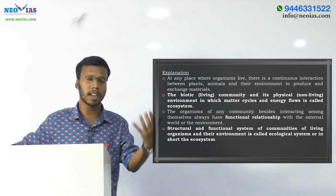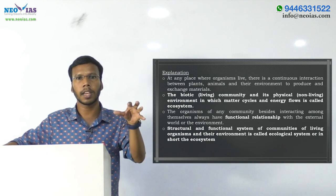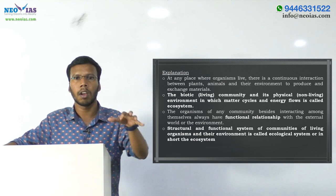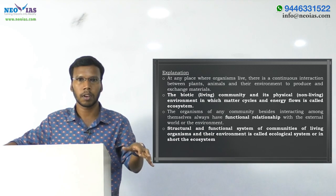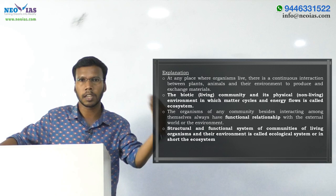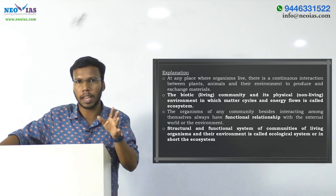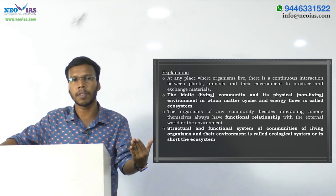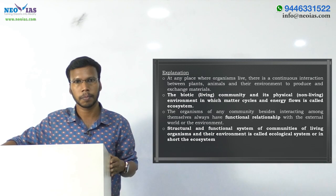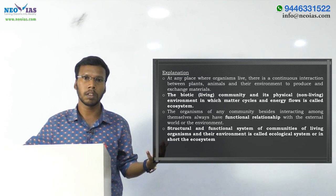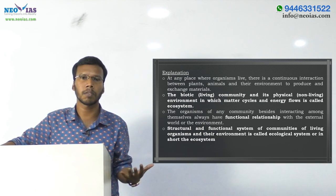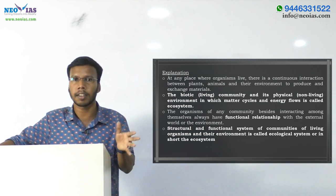Coming to the functional relation of tigers: they are apex predators, so they control the population of other herbivores like deer and rabbits. That is the functional relationship of the tiger to the environment. Similarly, birds disperse seeds. Like that, all living organisms have their own functional relationship with their environment.